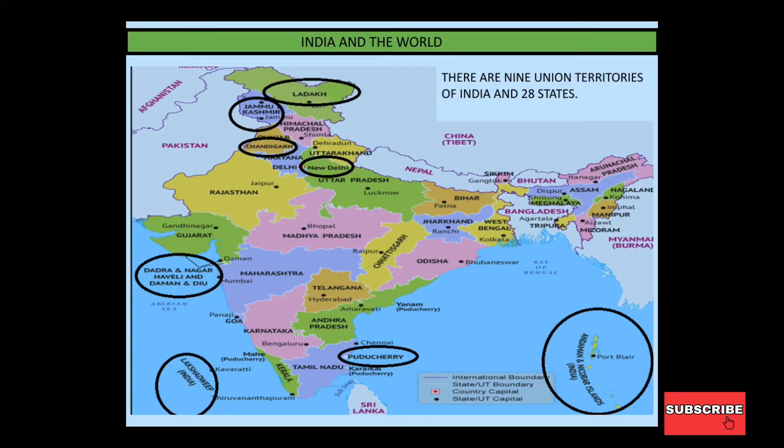India and the world. Today we will see how many Union Territories there are. We will see some land boundaries. First of all, let's see how many states are in India. There are 28 states and 9 Union Territories of India.